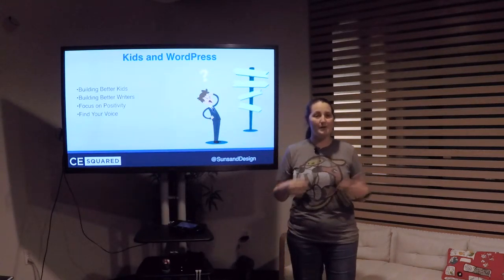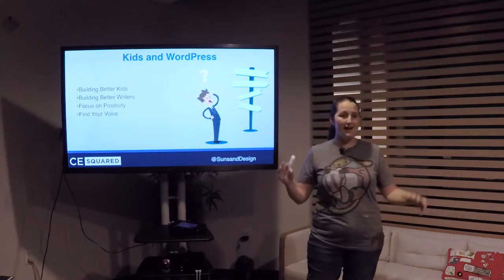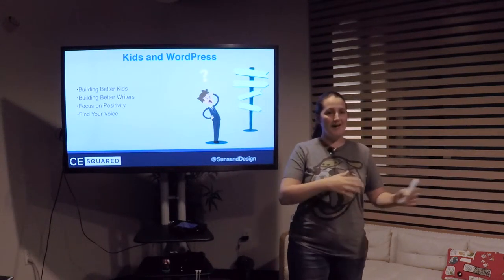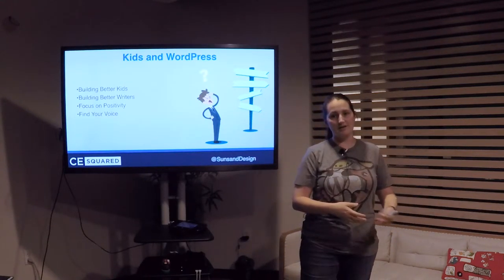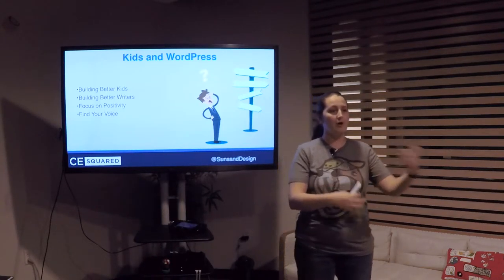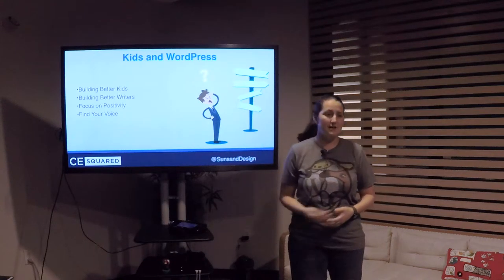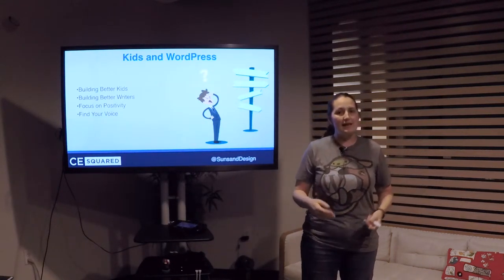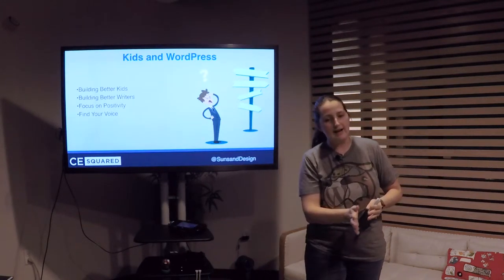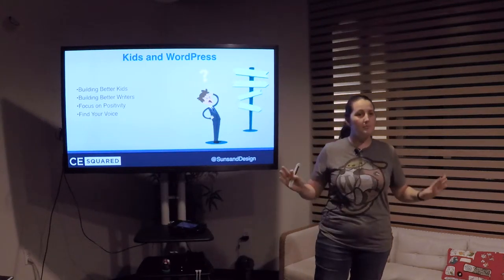We can also build better writers. We homeschool my son and we integrate WordPress into our English curriculum. When he writes a paper and goes through his rough draft process, his final draft has to be published on his blog. That shows we don't have to write for an audience of one — we can write for others and consider that audience. Hopefully these steps will allow them to see that as a business owner or entrepreneur, we can build a voice and guide our audience in a positive way.